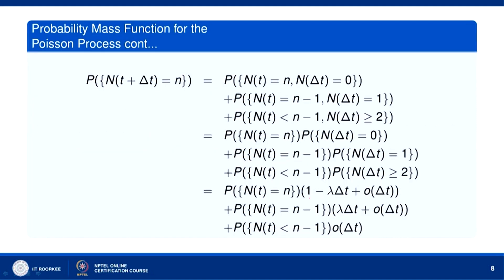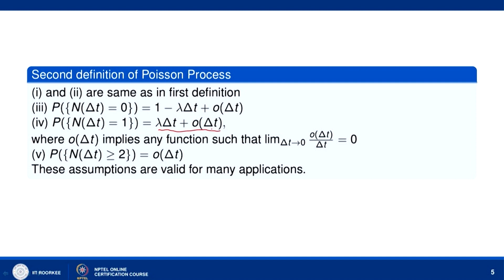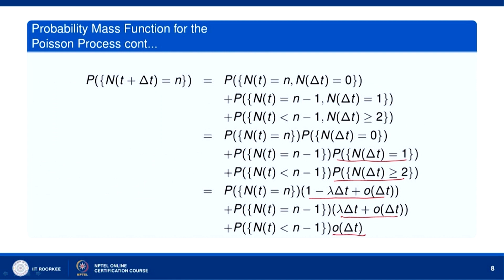So P(N(t + Δt) = n) = P(N(t) = n) · (1 − λΔt + o(Δt)) + P(N(t) = n−1) · (λΔt + o(Δt)) + P(N(t) = n−1) · o(Δt). Now let us find the limit of [P(N(t + Δt) = n) − P(N(t) = n)] / Δt. Multiplying out the right-hand side gives P(N(t) = n) minus λΔt · P(N(t) = n) plus λΔt · P(N(t) = n−1) plus terms involving o(Δt).